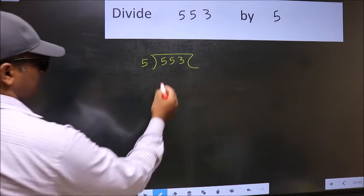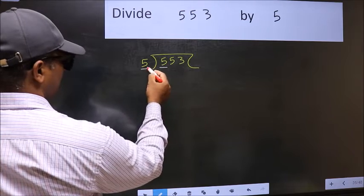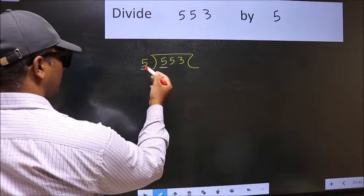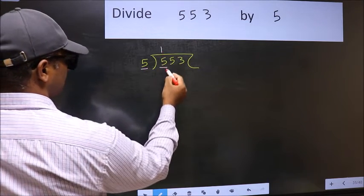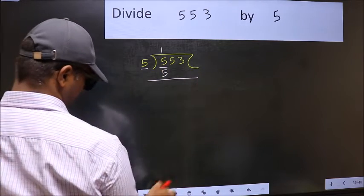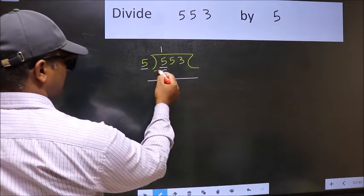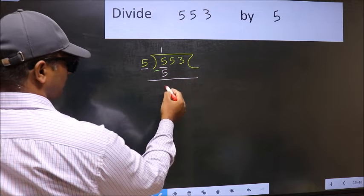here we have 5 and here also 5. When do we get 5 in 5 table? 5 once 5. Now you should subtract. 5 minus 5, 0.